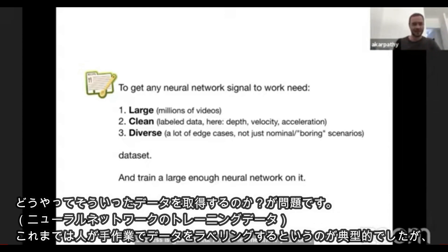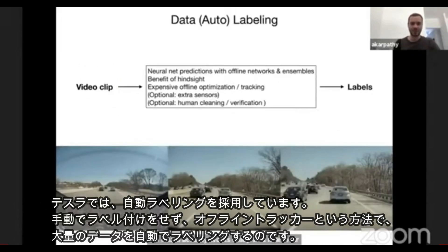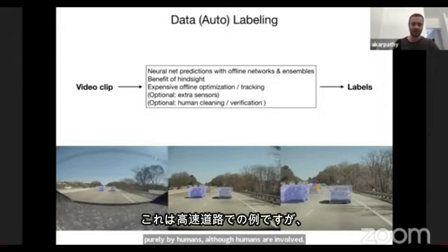So how are we going to achieve this dataset? The typical approach might be to use humans to annotate cars in three dimensions. What we found works really well is an auto-labeling approach — an offline tracker — not pure human annotation. It's an automated process for collecting data at the necessary scale, producing millions of hard examples, with humans still involved but labeling done automatically.